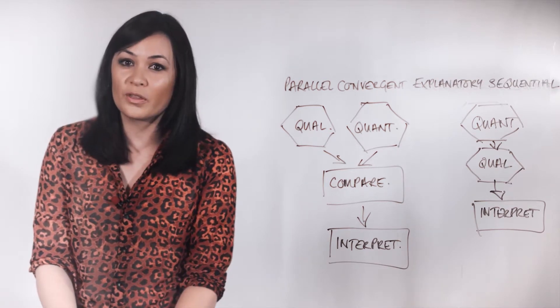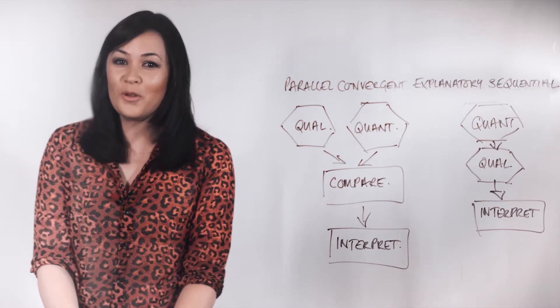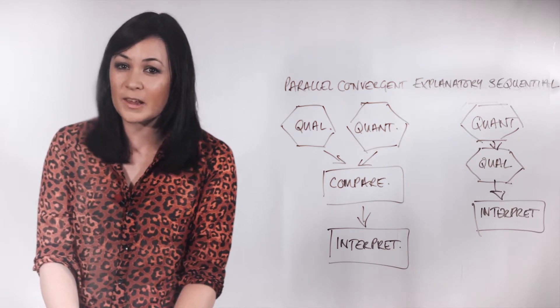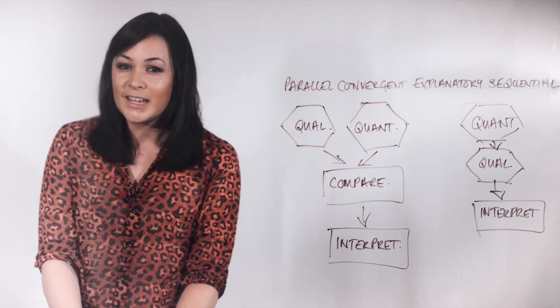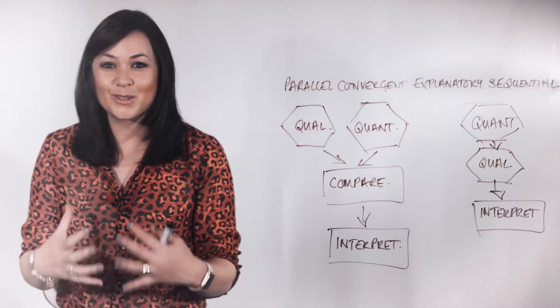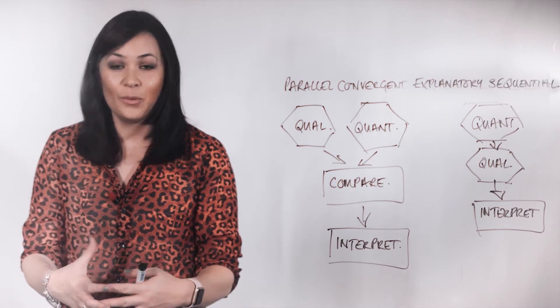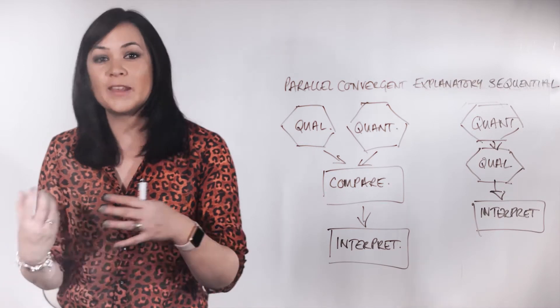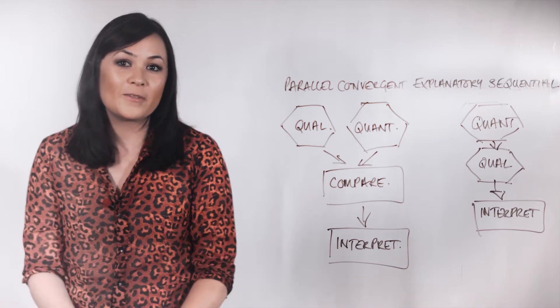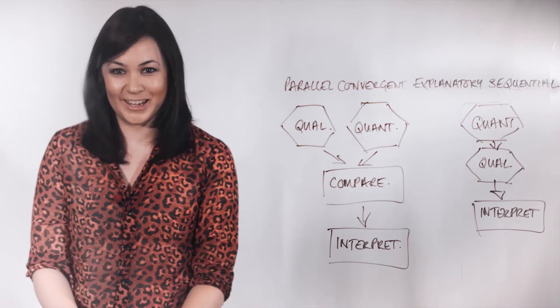And I'll also note that with dissertation research, you might consider the potential IRB challenges of sequential explanatory design, as these involve proposing two rounds of data collection, with the subsequent round dependent on the outcomes of the first one. See our IRB video for more information on this.